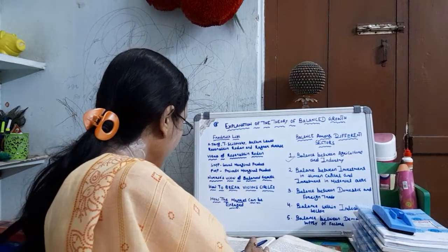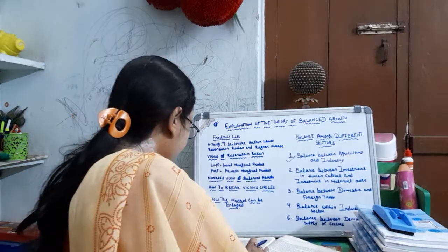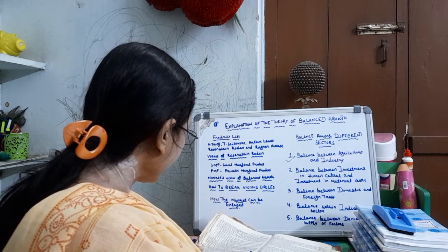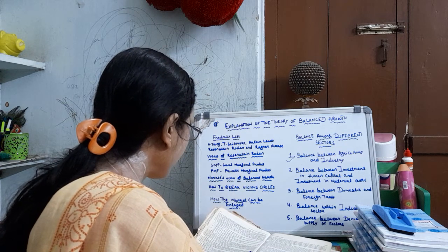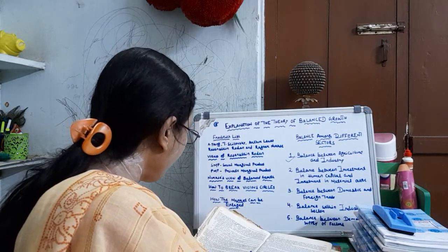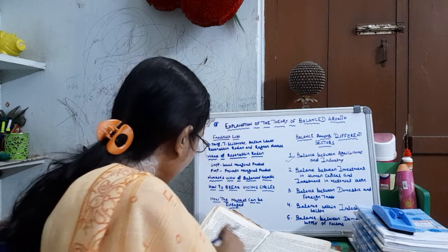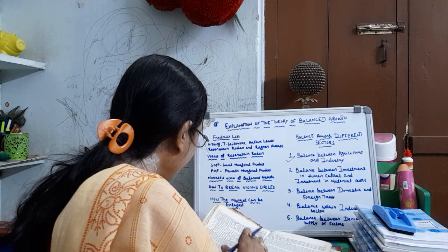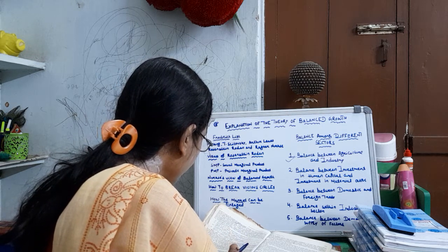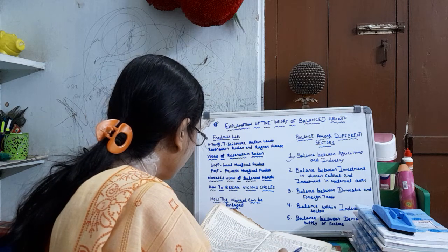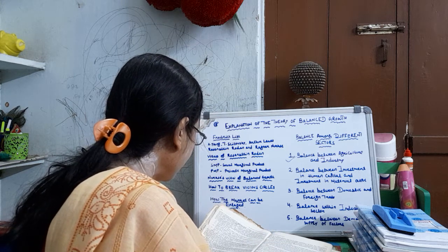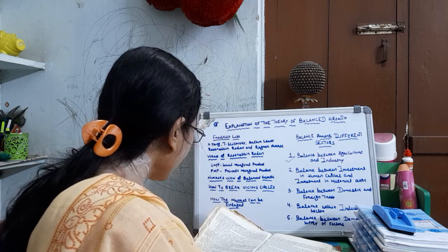Fourth: balance within industrial sectors. It implies that some internal consistency should be maintained even within the industrial sector itself. Interdependence of industries is needed for balanced growth. For example, a steel factory can be usefully built only if raw materials are easily available. Similarly, steel units should not be operated to full capacity if there is no demand for its products. In short, there should be a balance between consumer goods industries and capital goods industries. More output of consumer goods is needed to improve the standard of living and control inflationary tendencies. In an underdeveloped economy, both small-scale and large-scale sectors need proper attention.